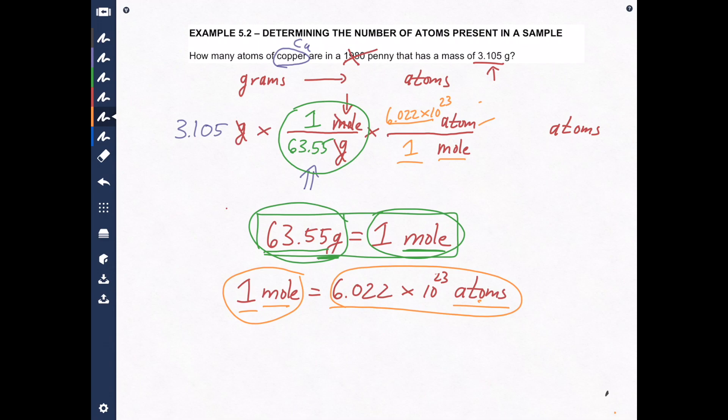Now grab your calculator. I need a scientific calculator to do this one. It's going to be 3.105 divided by 63.55 multiplied by 6.022 exponent 23 equals. Now the calculator gives me this answer: 2.942299 times 10 to the 22, which we know isn't completely right because we haven't rounded it yet.